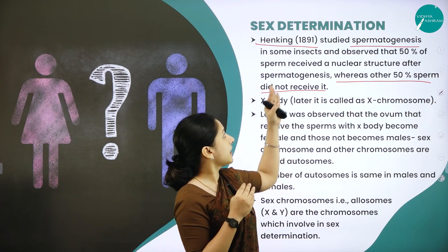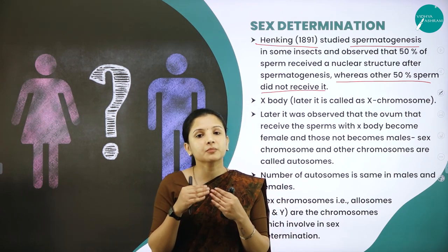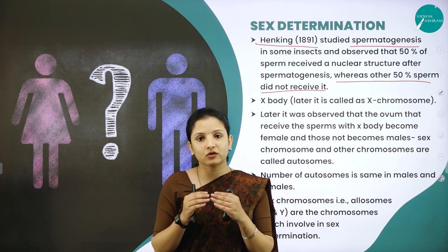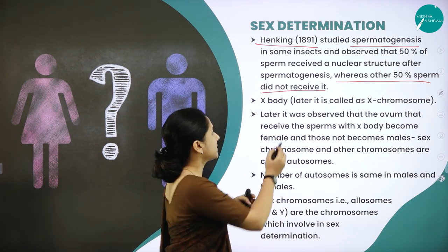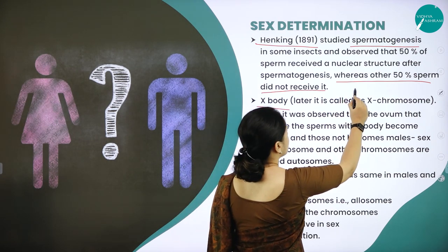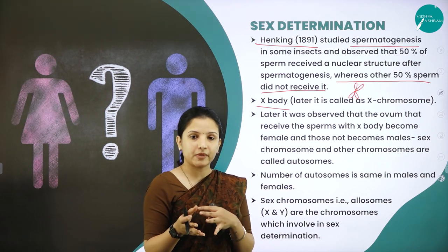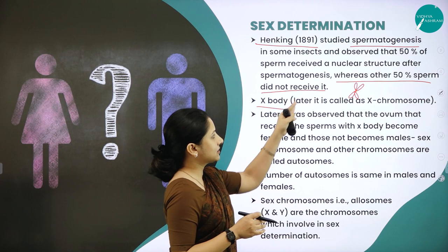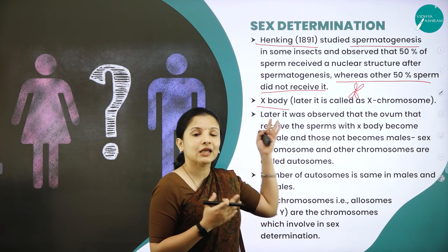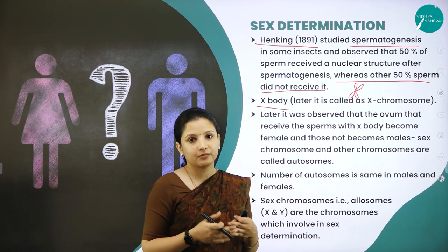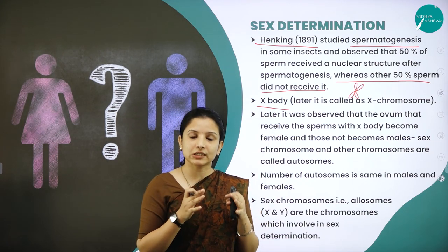Henking understood that during spermatogenesis in insects, sperms receive 50% of the nuclear content, but he did not know that nuclear content was the chromosome. Because the chromosomes look like an X shape, he called them 'X bodies.' He said some X bodies are transferred to the sperms during spermatogenesis. Later, scientists became curious about these X bodies and conducted further experiments, finding that the X bodies were nothing but the X chromosomes.